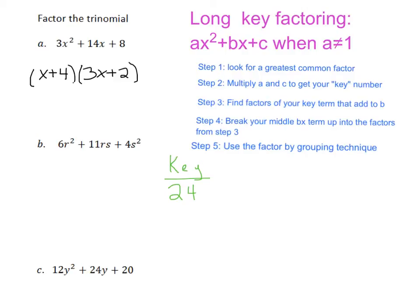And now we're going to look for factors of 24 that add to our middle term. So find factors of your key term that add to B. What is B here? 11. So let's get our factors of 24. There's going to be 24 and 1 and 12 and 2. Those don't add to 11.